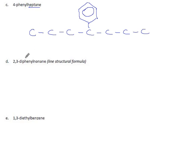2,3-diphenylnonane. Well, nonane is our primary, so start there. One, two, three, four, five, six, seven, eight, nine. The second carbon has a phenyl group on it. And the third carbon also has a phenyl group attached to it. So that's our formula.